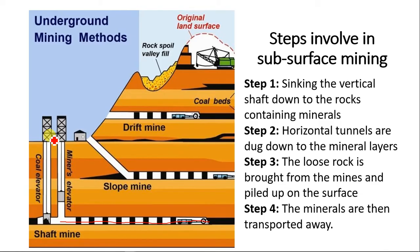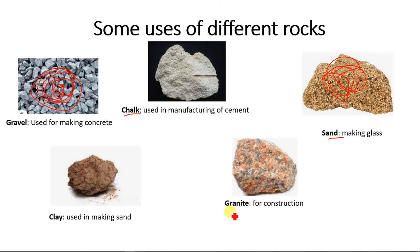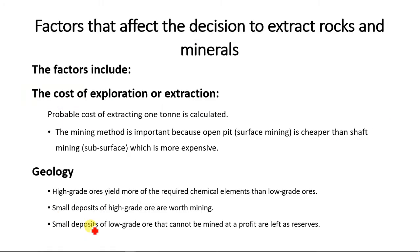Some uses of different rocks: gravel is used for making concrete, which is a major building material. Chalk and limestone are used to manufacture cement. Sandstone is used for making glass. Granite is used for construction. Clay is used in making sand and also for construction purposes.